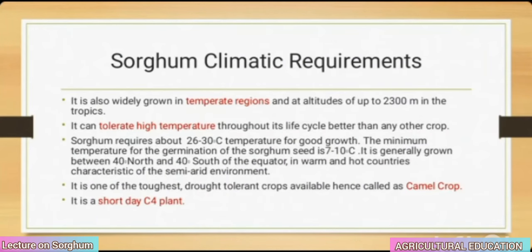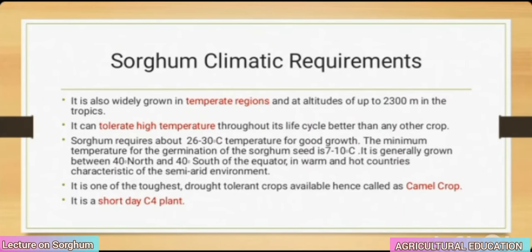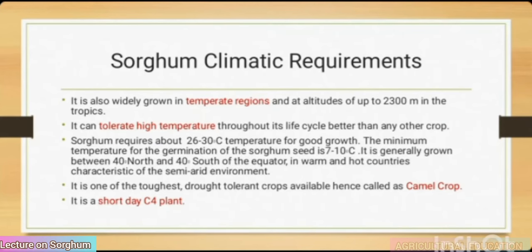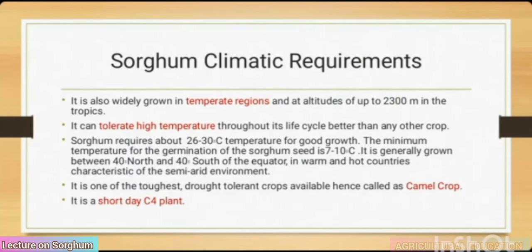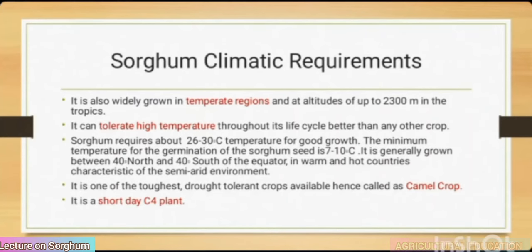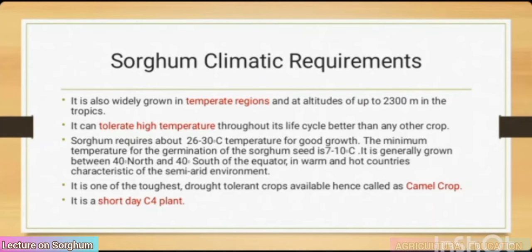Sorghum climatic requirements: it is widely grown in temperate regions and at altitudes up to 2300 meters in the tropics. It can tolerate high temperatures throughout its life cycle better than any other crop. Sorghum requires about 26 to 30°C for good growth; the minimum temperature for germination is 7 to 10°C. It is grown between 40° north and 40° south of the equator in warm and hot countries characteristic of the semi-arid environment. It is one of the most drought-tolerant crops available, hence called a camel crop. It is a short-day C4 plant.